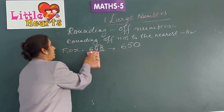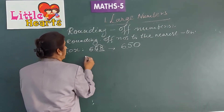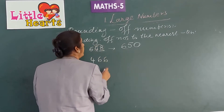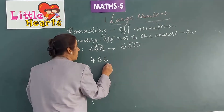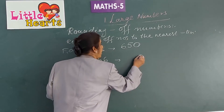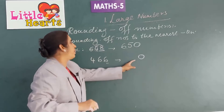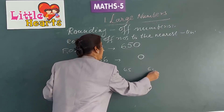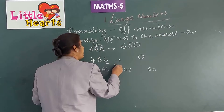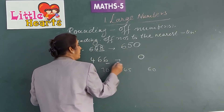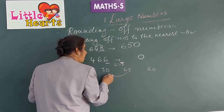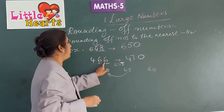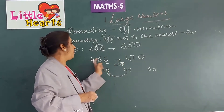One more example: 466. First, round to the nearest 10. Check the ones place digit — put 0 in the ones place since the answer must be a multiple of 10. The ones digit is 6, which is greater than 5, so it should be rounded to the next 10. Therefore, 466 becomes 470. Add 1 to the tens place digit if the ones digit is greater than 5.